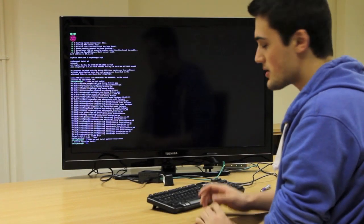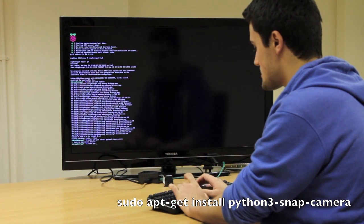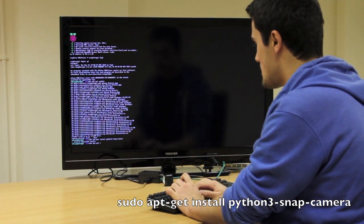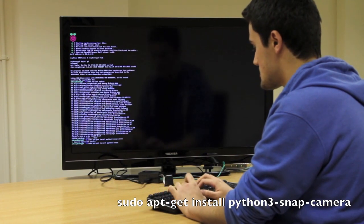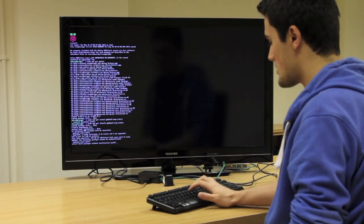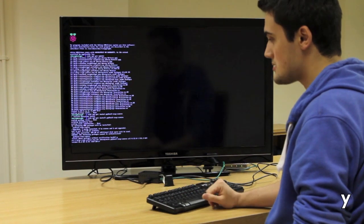That's done, and now we're going to install the snap camera. We're going to do sudo apt-get install python3-snap-camera and enter Y for yes.